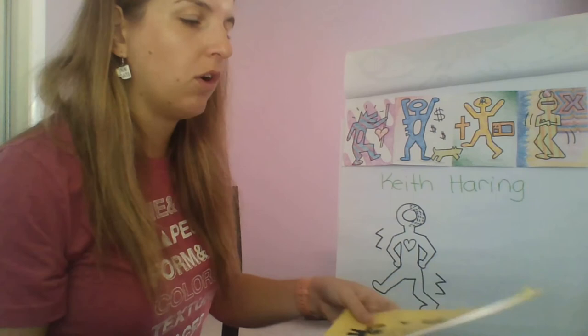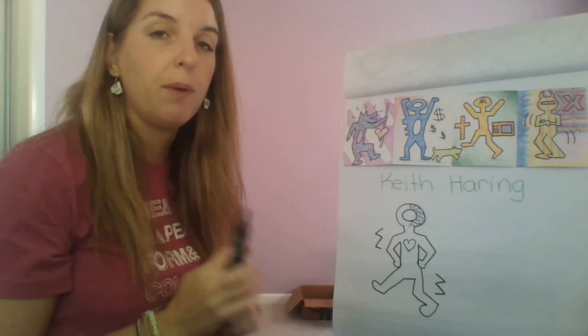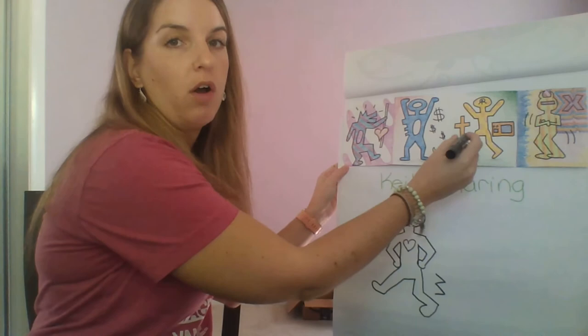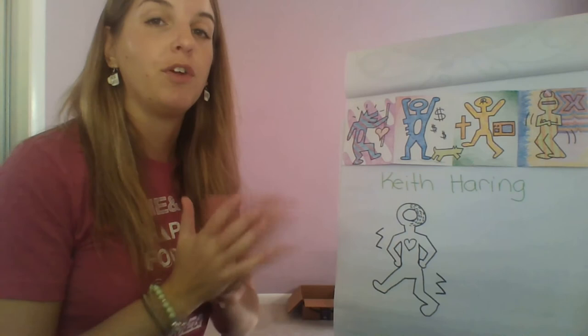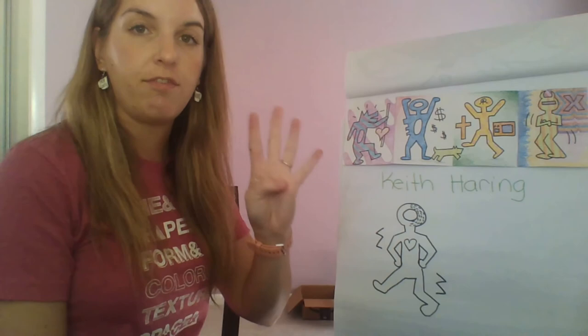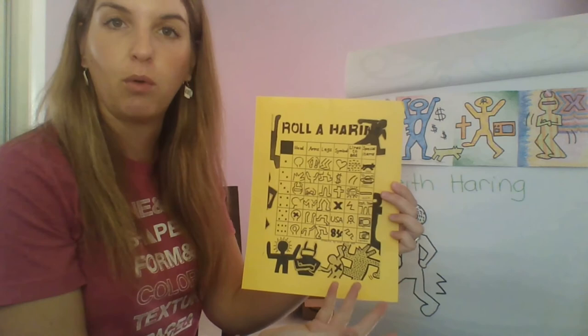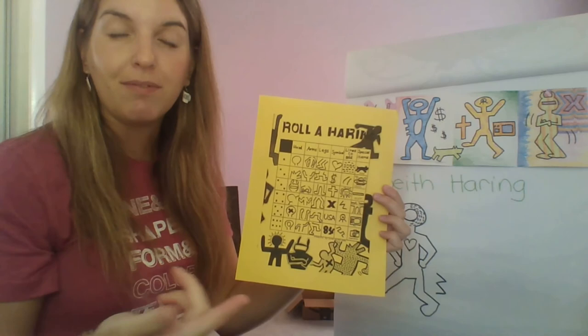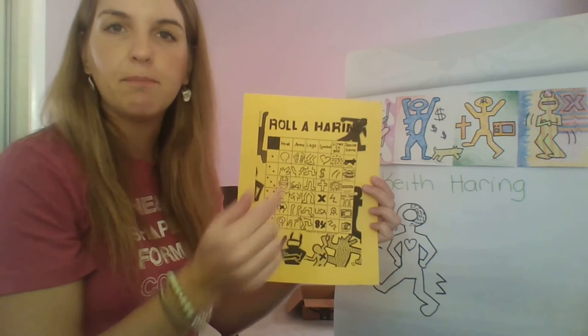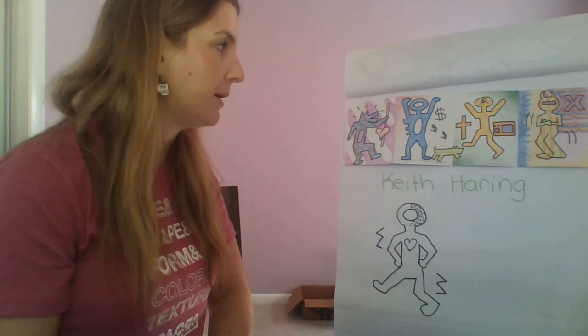Once you're all done, you are going to color. Draw everything in pencil first, then if you have a black marker or a Sharpie, take that and outline everything you've drawn, and then color them in using whatever you want — marker, colored pencil, crayon, or a combination of all of those, whatever you have at home. Your assignment: you will have two weeks to work on this. You are doing four figures and you can use the Roll a Haring sheet to help you out. If you have dice you could roll, or just look at the sheet and pick what you like — or close your eyes, point at something random, and draw that. Have fun with it, be creative, and I can't wait to see your Keith Haring figures. See you guys next time — bye!